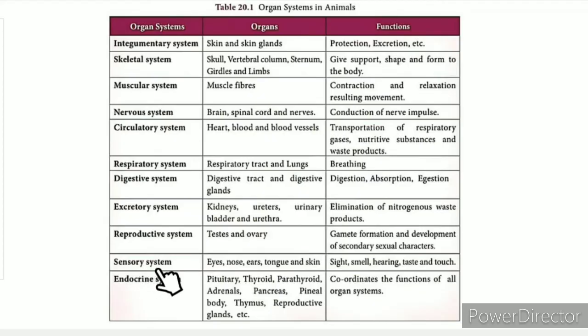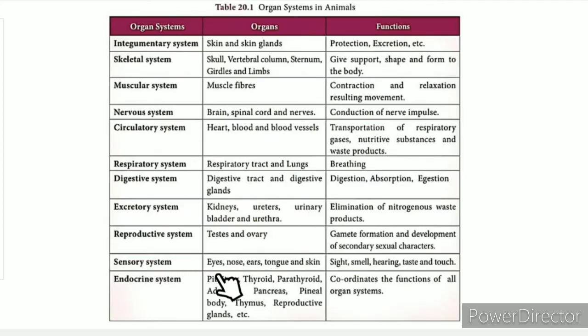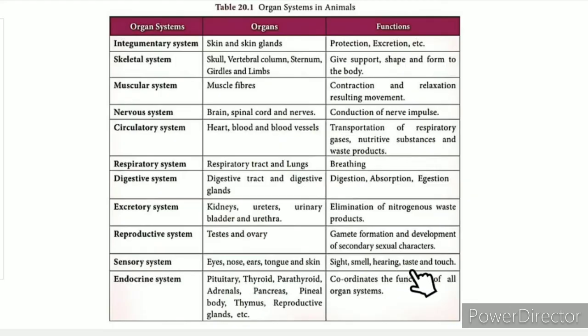The sensory system, studied from the third and fourth standard, includes the sense organs: eyes, nose, ears, tongue, and skin — responsible for sight, smell, hearing, taste, and touch respectively.